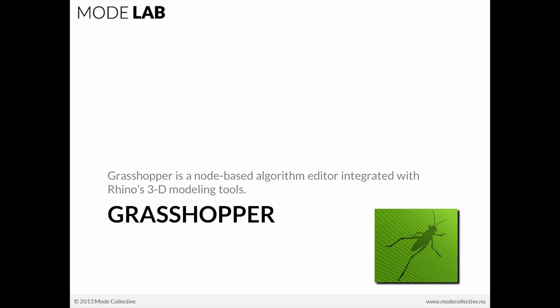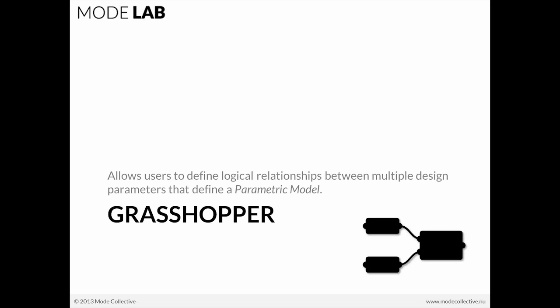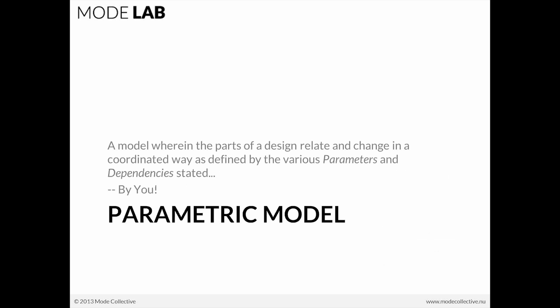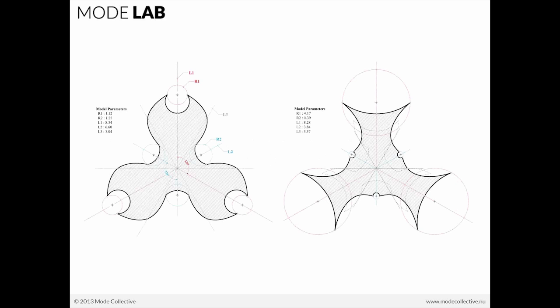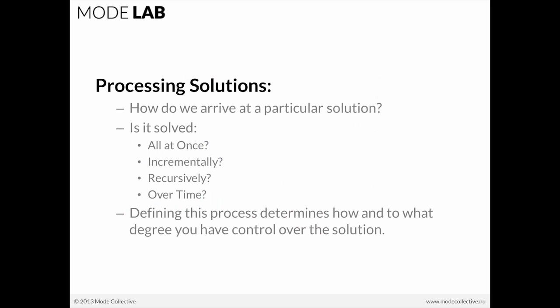We're going to be using Grasshopper — a node-based algorithm editor that allows us to use most of Rhino3D's modeling tools. We connect nodes to define logical relationships, which defines a parametric model wherein the parts relate and change in a coordinated way as defined by our inputs. The idea behind parametrics is that there may be a particular instance that results from the model, but each shape is as much a part of the parametric model as another, even though they look very different — they are bound by the same relationships but have different input values.